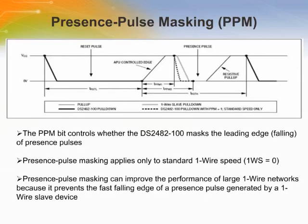The PPM bit controls whether the DS-2482-100 masks the leading edge of presence pulses. Presence pulse masking applies only to standard One Wire speed and can improve the performance of large One Wire networks because it prevents the fast falling edge of a presence pulse generated by a One Wire slave device. This slide shows the timing references for presence pulse masking. If enabled (PPM = 1), the DS-2482-100 begins pulling the One Wire line low at T-PPM1. After the reset low time T-RSTL expires, the pull-down ends at T-PPM2, at which point a One Wire slave, if present, is pulling the One Wire line low. The falling edge of the presence pulse mask is slew rate controlled.